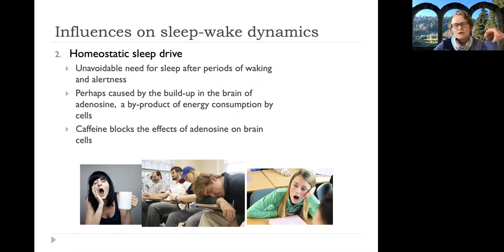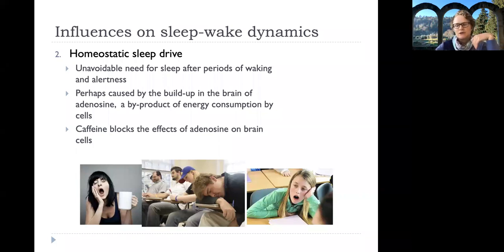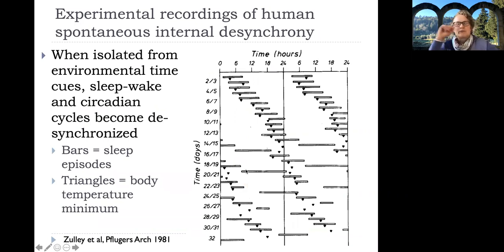Under normal circumstances, the circadian clock and the homeostatic sleep drive are entrained so that we have the most promotion for waking during daylight and promotion for sleep during night. But they can get disrupted and desynchronized — especially during jet lag — and during this time when we're trying to shift our schedule. The spring-ahead that we're experiencing now is so much more painful than the fall-back because our natural circadian clock is a little bit longer than 24 hours, so we naturally want to delay rather than advance.